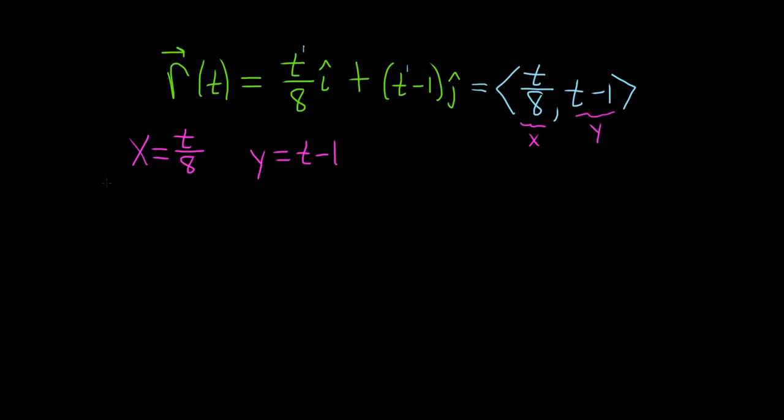So what you can do now is you can solve this first equation here for t. So multiply by 8 on both sides. That will give us t equals 8x. And then what you do is you plug the t into the other equation.